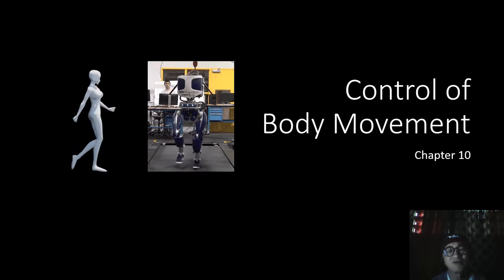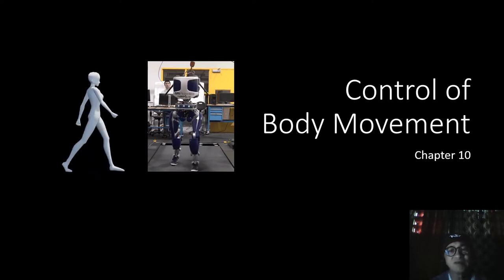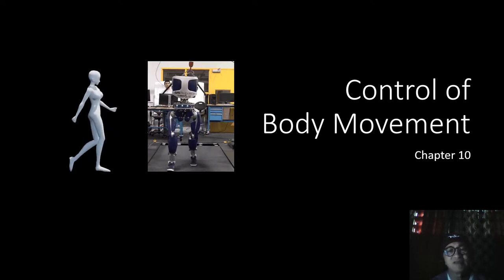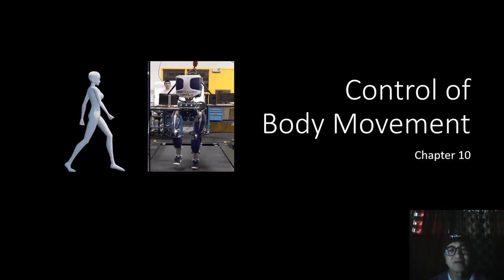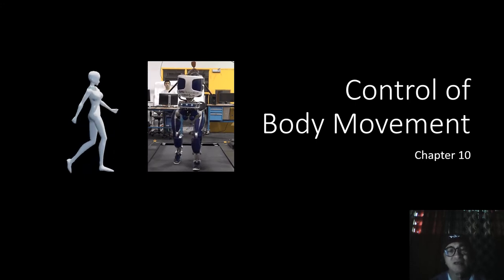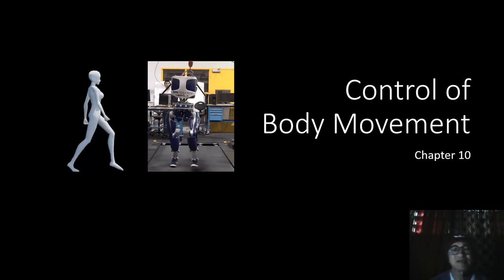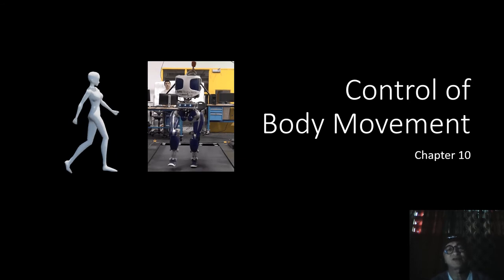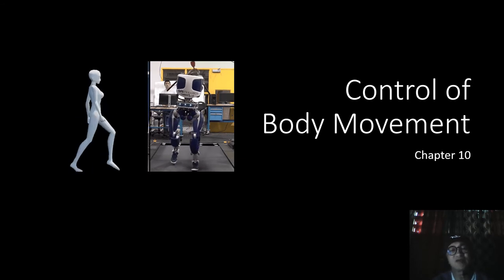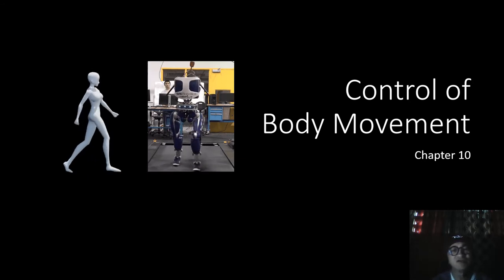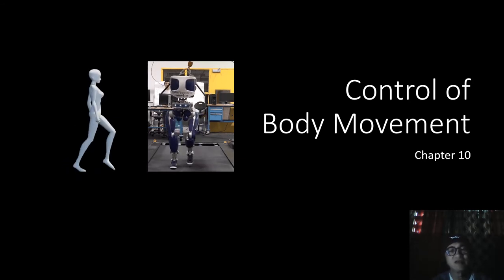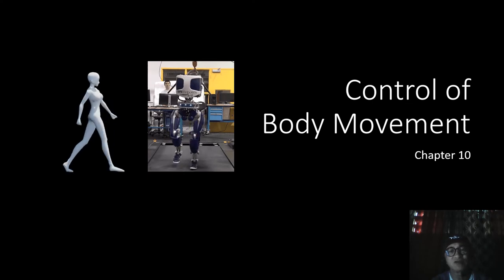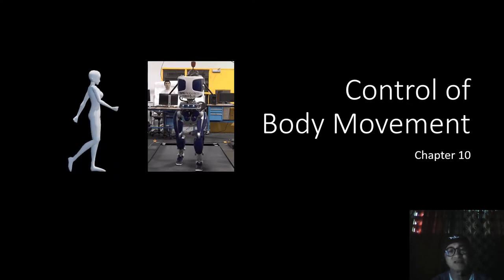Chapter 10 is about the control of body movement. Body movement, such as the arc of walking or ambulation, is a complex effect of various muscular movements of extension, flexion, rotation, elevation, depression, contortions, and adjustments.